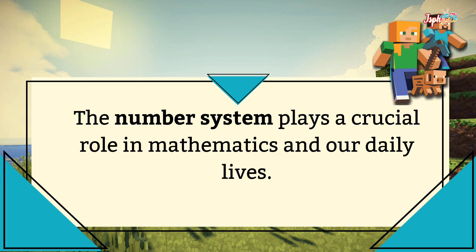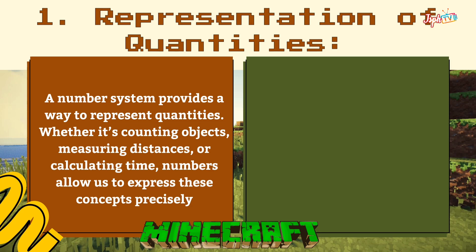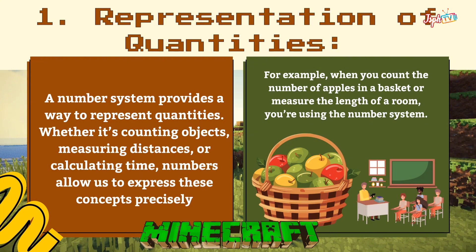The number system plays a crucial role in mathematics and our daily lives. For representation of quantities, a number system provides a way to represent quantities. Whether it's counting objects, measuring distances, or calculating time, numbers allow us to express these concepts precisely. For example, when you count the number of apples in a basket or measure the length of a room, you're using the number system.